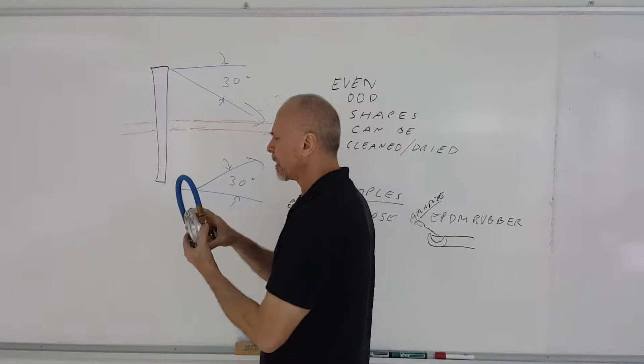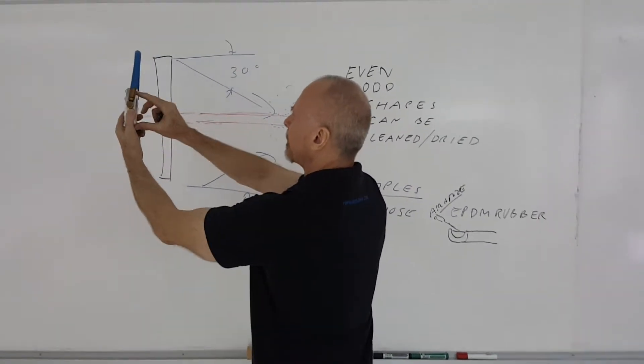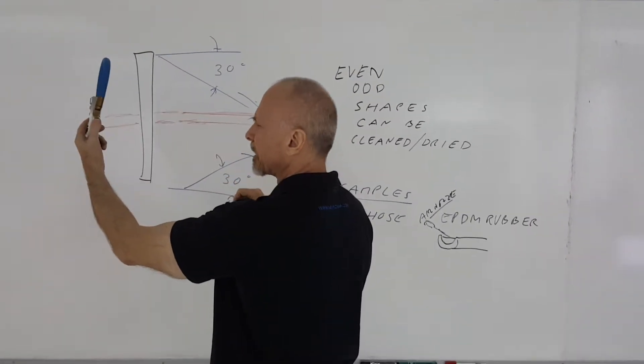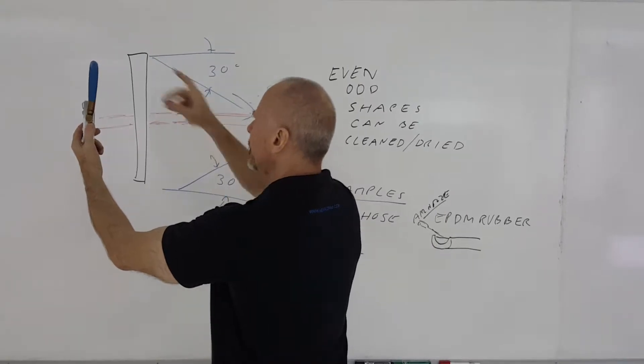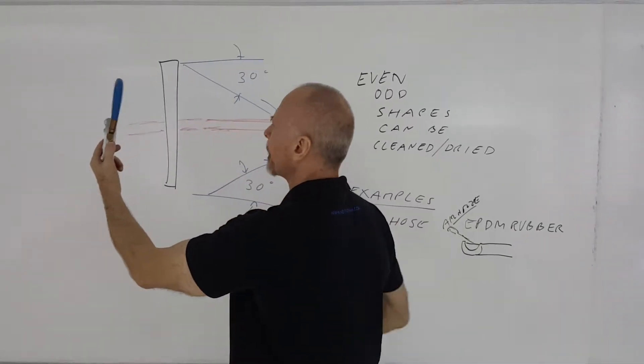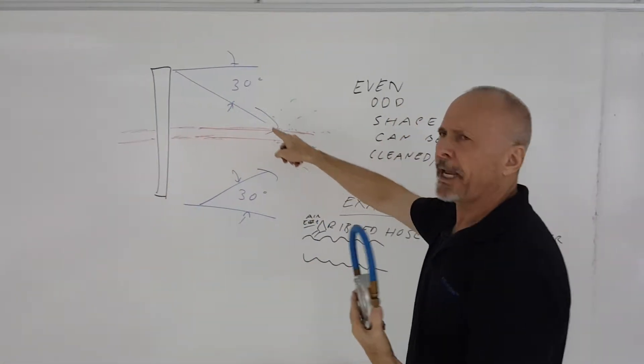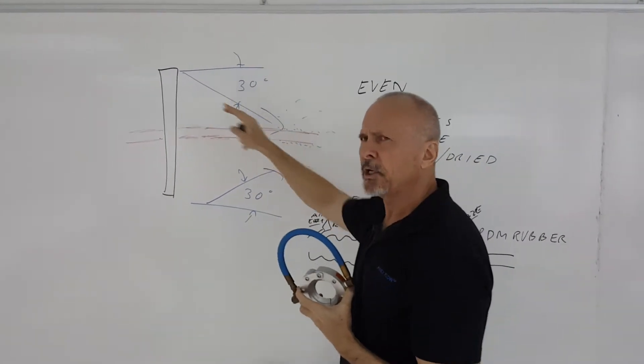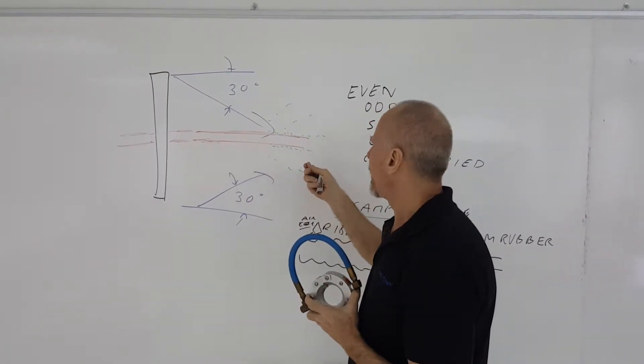Now the way the air wipe works is basically the air comes out amplifying the compressed air that comes out of the blow-off by entraining air. It comes out at a 30 degree angle. So even with that 30 degree angle, you can get into some pretty good corners that way.